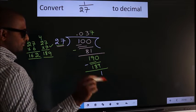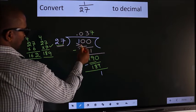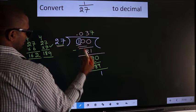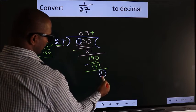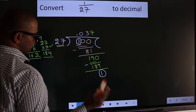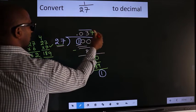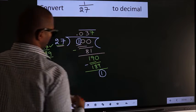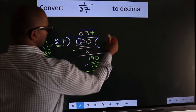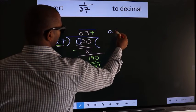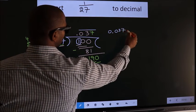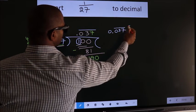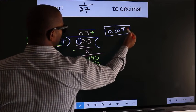Now here you observe: we had 1 here, and we got 1 again. That means we get a bar on these 3 numbers. Therefore, our answer is 0.037 with a bar on these 3 numbers. This is our answer.